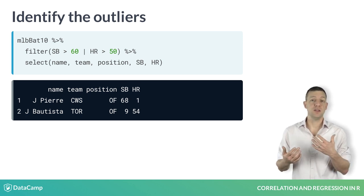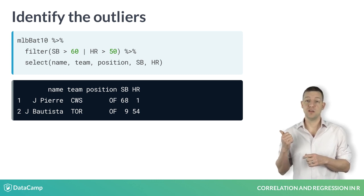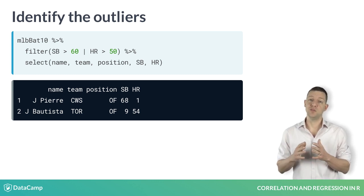As it turns out, the player in the lower right-hand corner is Juan Pierre, who is one of the speediest and least powerful hitters in recent memory. The player at the top is Jose Batista, one of the game's most revered sluggers.